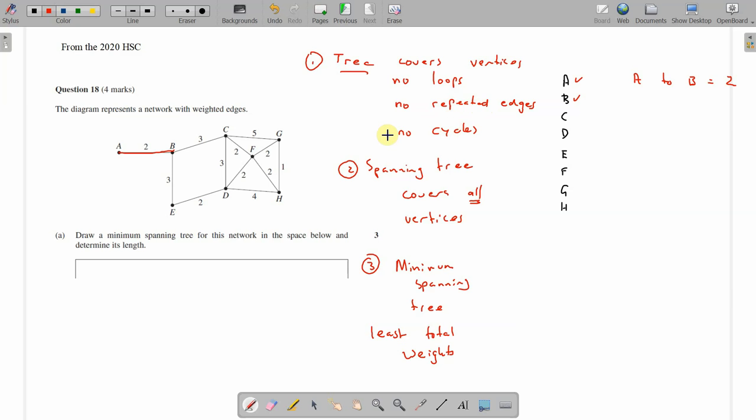We don't need to cover them again, but we've got to keep in mind no repeated edges or cycles. Now we've covered A and B. From B which edge is the least weight? Looks like we've got two of them of the same weight, so it doesn't matter which one. I'm going to go B to C, which has a weight of three.